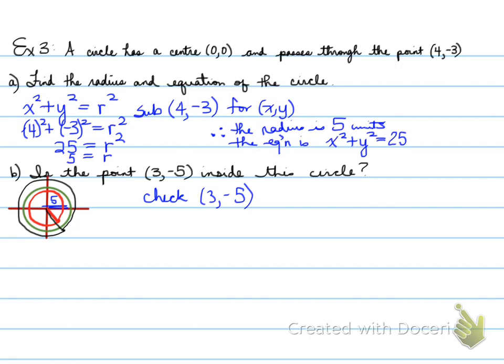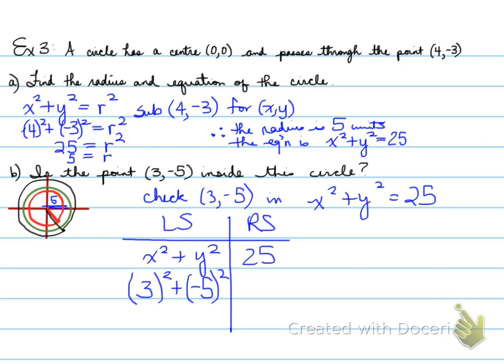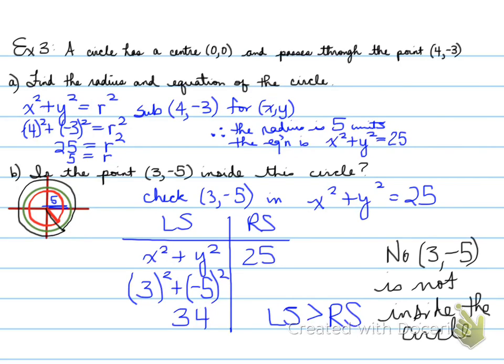We're going to check 3, negative 5 into the equation x squared plus y squared equals 25. We got that from part A. That's the equation of the green one. We plug it in, 3, negative 5 for x and y, and you find out that 3 squared plus negative 5 squared is equal to 34. We see that the left side that we plugged in is actually greater than the right side. When the leftovers are greater than the radius one that we're given, 3, negative 5 cannot be inside the circle. It's got to be outside the circle.